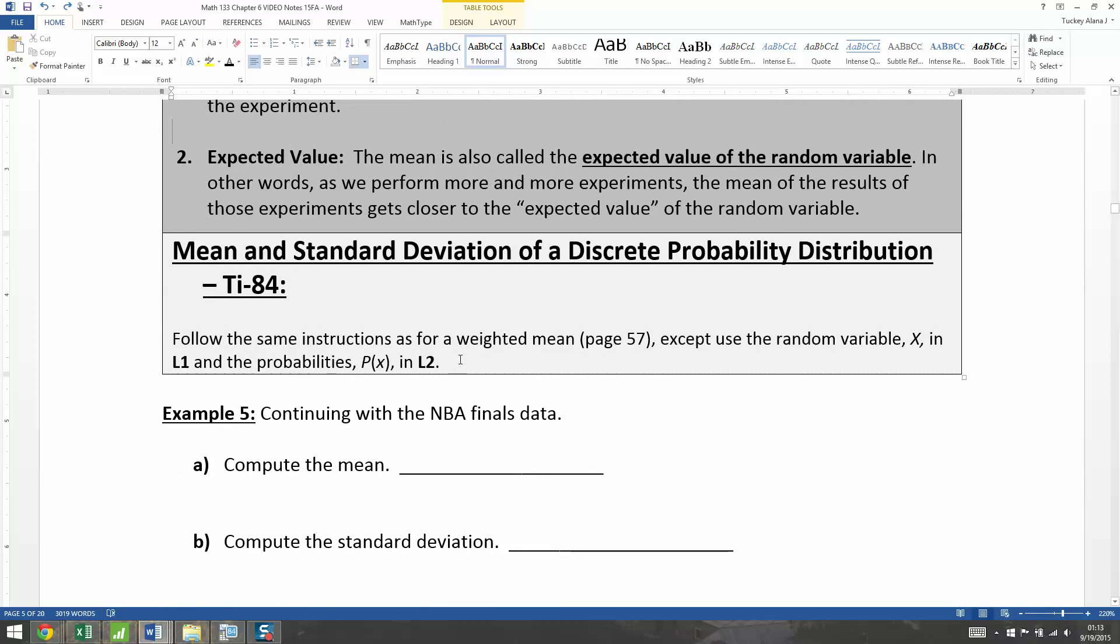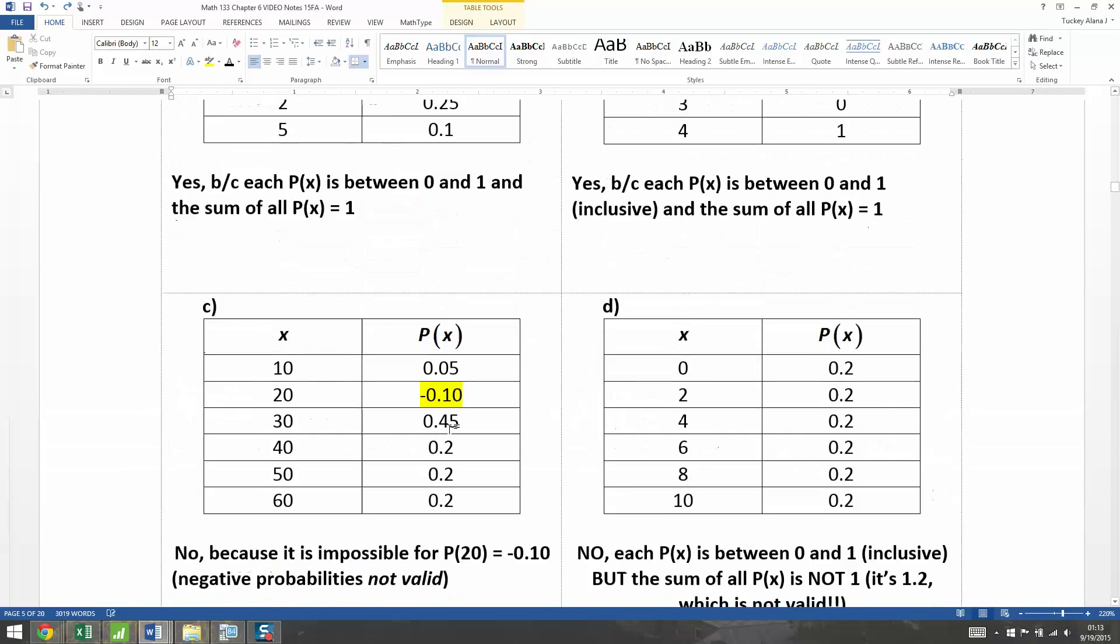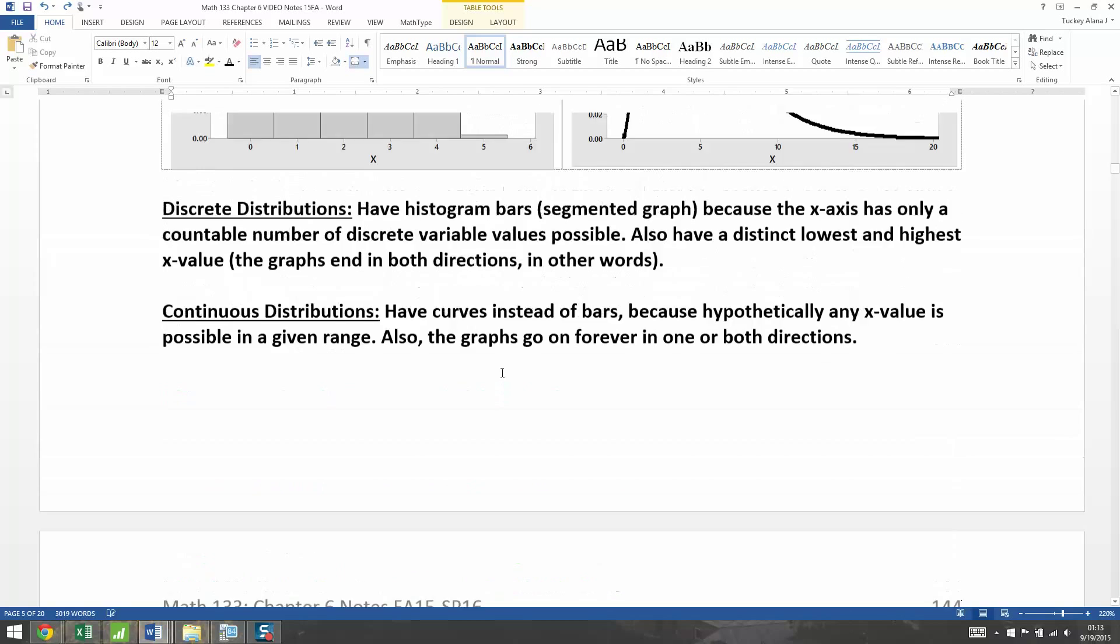All right, so we find them, however, when you use your calculator, the same way you would find a weighted mean from Chapter 3. So let me just show you the NBA Finals real quickly. This will be pretty straightforward.